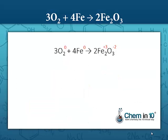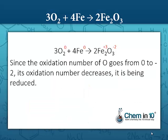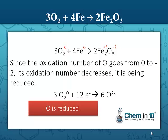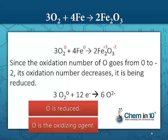Now let's look at oxygen. Oxygen is going from an oxidation number of zero to negative two — its oxidation number is being reduced, so oxygen is being reduced. This is its half reaction: oxygen goes from zero to negative two. Because its oxidation number is being reduced, oxygen is the oxidizing agent, because by being reduced it is causing the oxidation of iron.